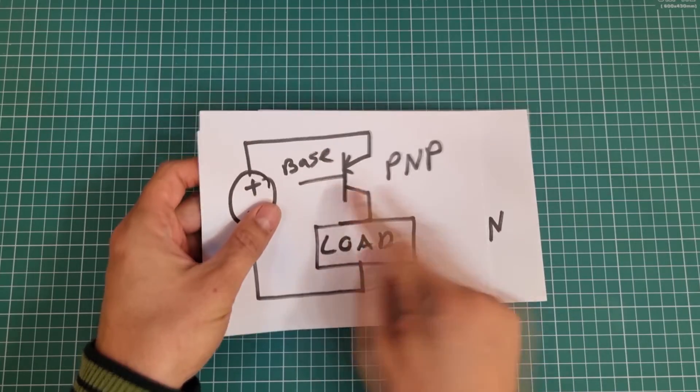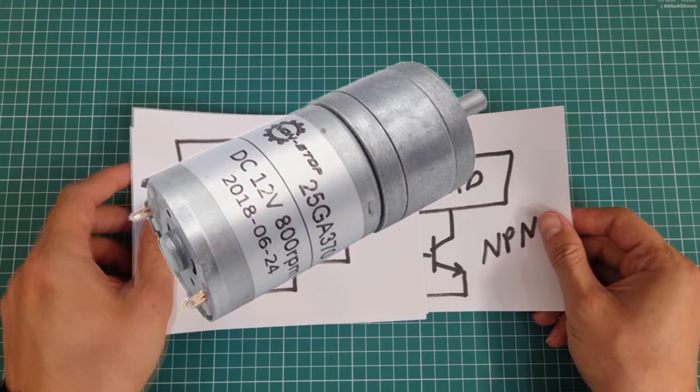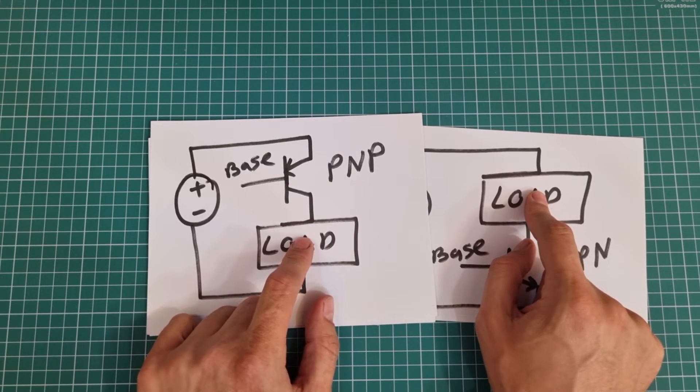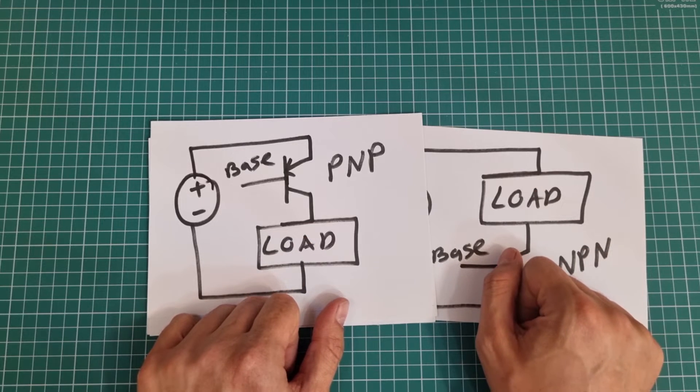Let's suppose that the load is a 12-volt DC motor. Because of that, we need a 12-volt power supply. Emitter pin of NPN transistor must be connected to ground or 0-volt and emitter pin of PNP type should be connected to 12-volt.